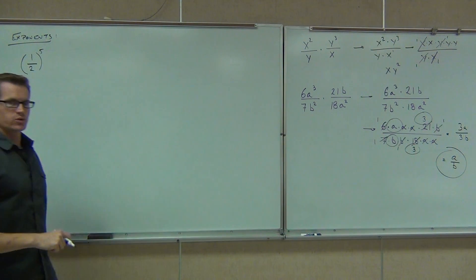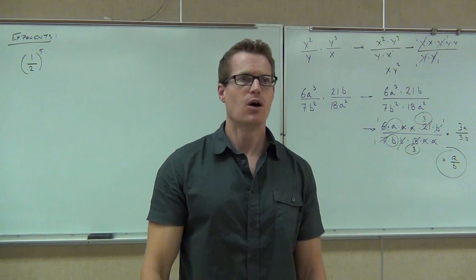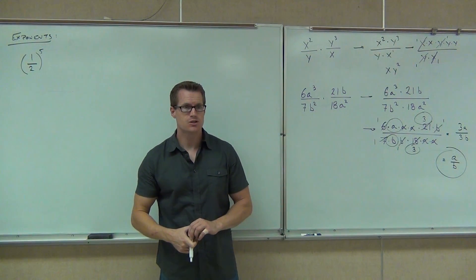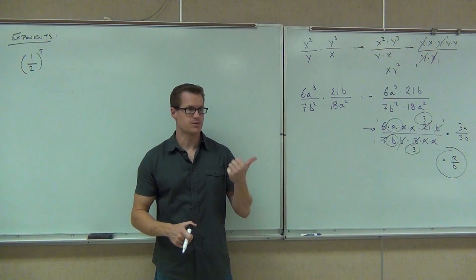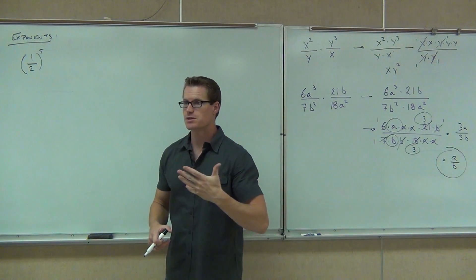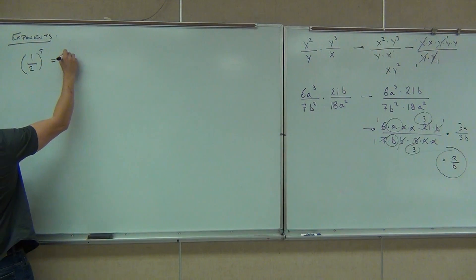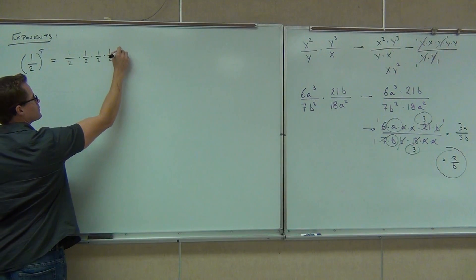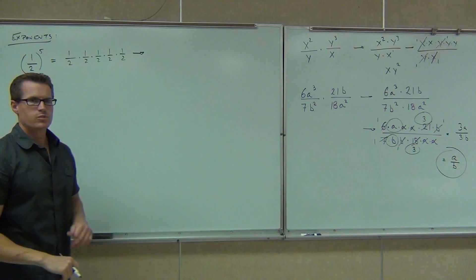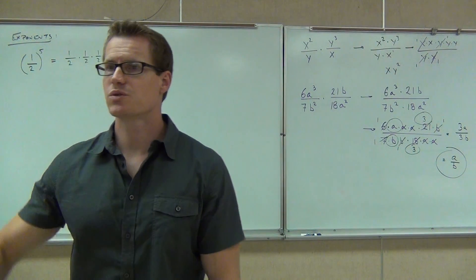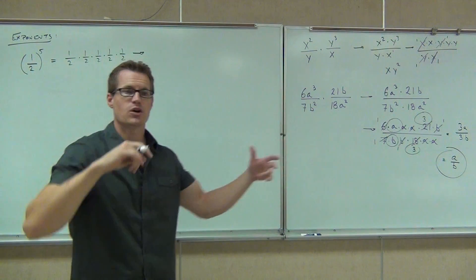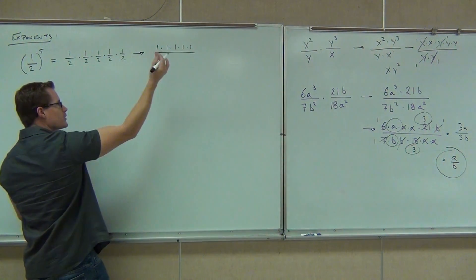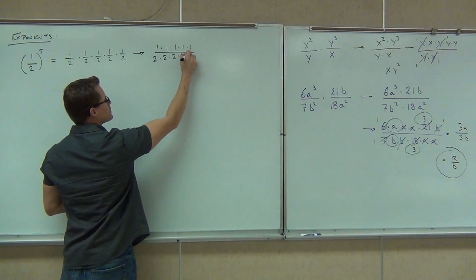Can we take fractions to an exponent? One half to the fifth power — what does the fifth power actually mean? Five times. So what this really means is one half times one half times one half, five times. Now we do know how to multiply fractions. We get one half five times. In order to multiply fractions, even if you have more than two of them, we take numerator times numerator times numerator — all the numerators on one fraction.